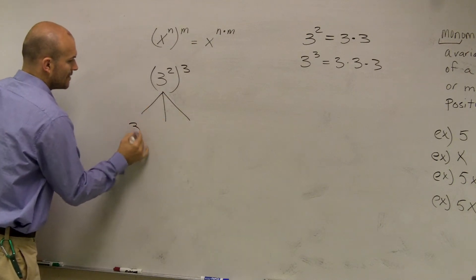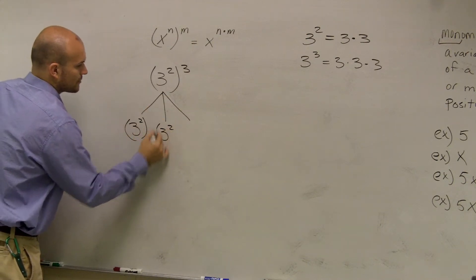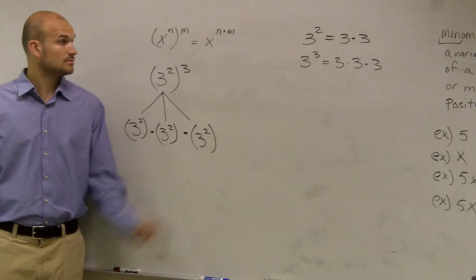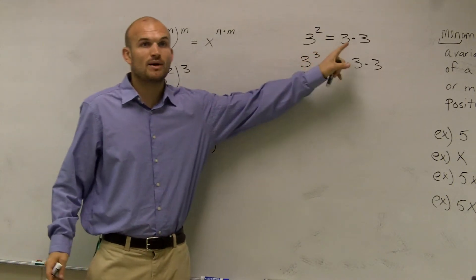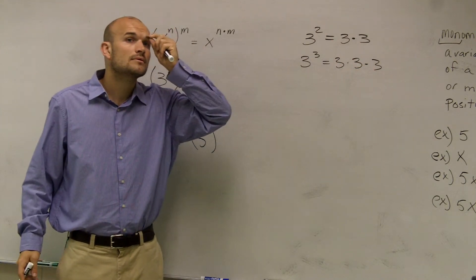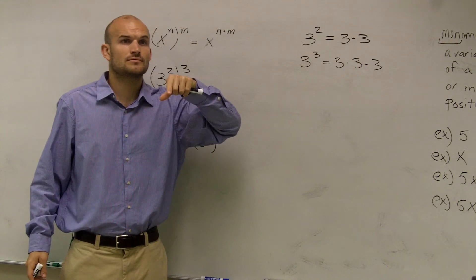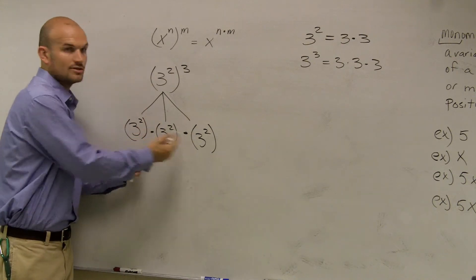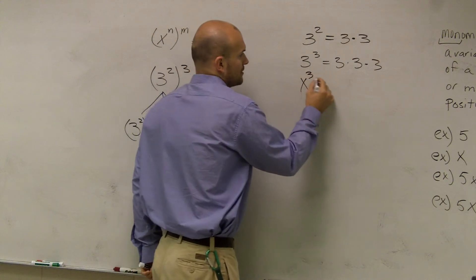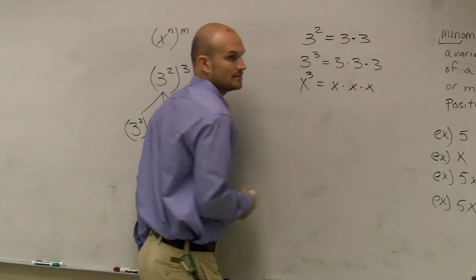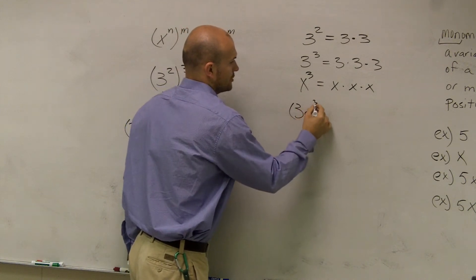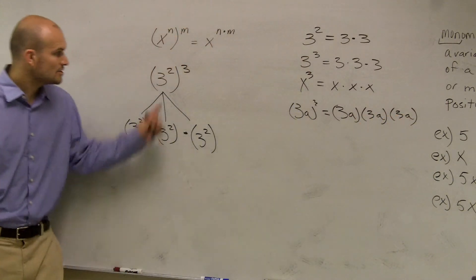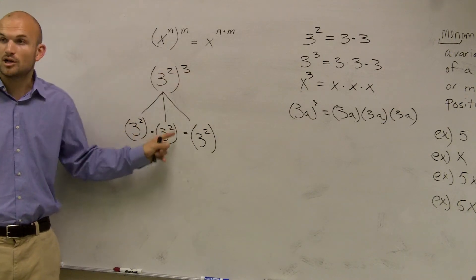That cubed means I have 3 squared times 3 squared times 3 squared — whatever your base is, multiplied by itself 3 times. It doesn't matter what your base is. If I said x cubed, that equals x times x times x. It doesn't matter if I had 3a cubed — that equals 3a times 3a times 3a.